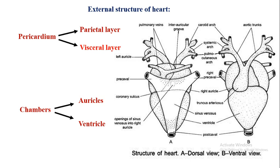The two auricles are also marked off from the ventricle by a narrow transverse auriculo-ventricular groove called the coronary sulcus. In the diagram you can see the coronary sulcus, which demarcates the auricle from the ventricle — they appear separate due to the presence of this coronary sulcus.